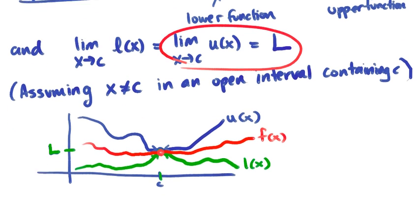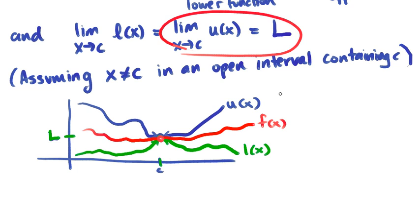So our goal really is to find an upper function and a lower function that are sitting on each side of our function but whose limits are the same, and therefore squeeze our f of x function to that limit. Let's take a look at some trig limits and how this fits in with trig limits as well.